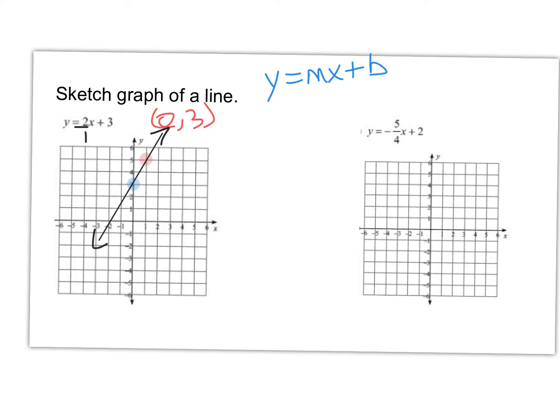Now let's take a look at this one here: y equals negative 5 fourths x plus 2. This one has a y-intercept of plus 2. So we can start with the y-intercept of 2. I'm going to go to 0, and since it's a positive 2, I'm going to go up 2. I will put my point at 0, 2. That's the y-intercept.